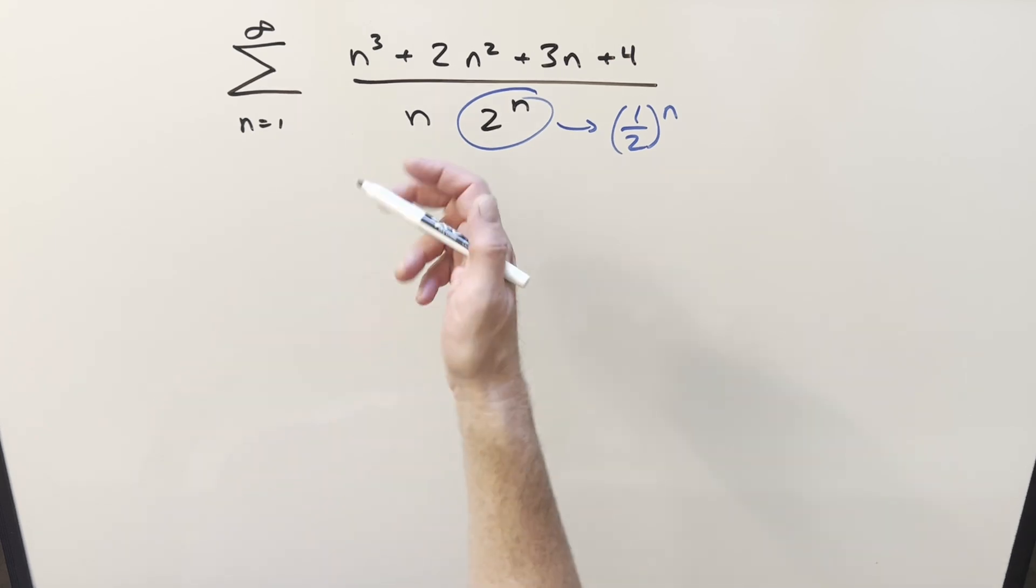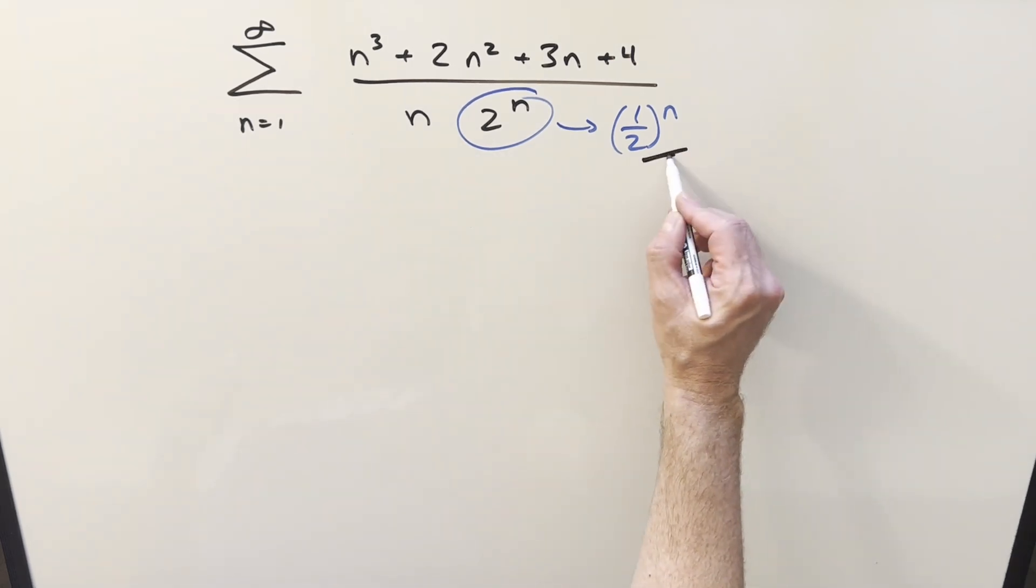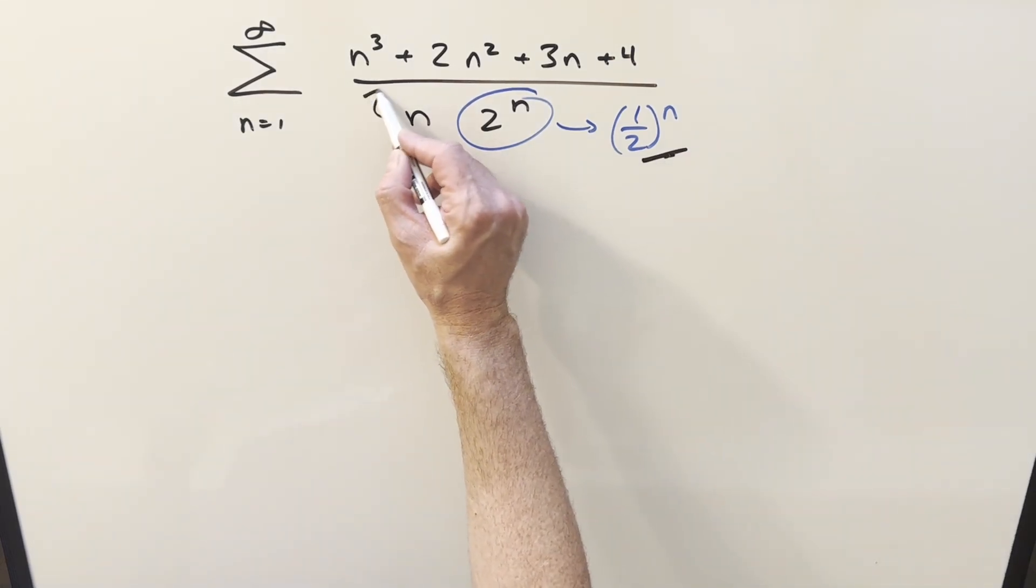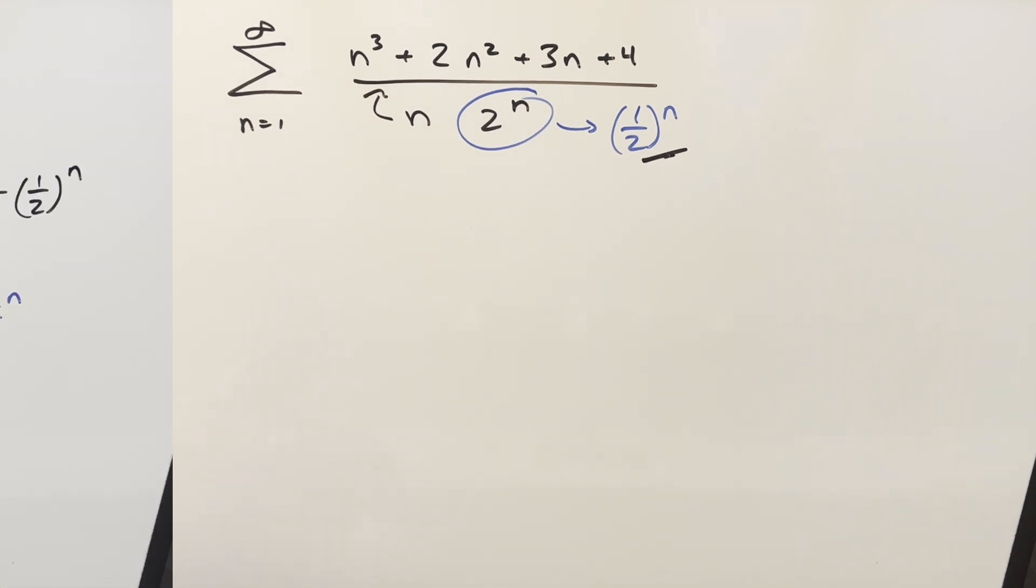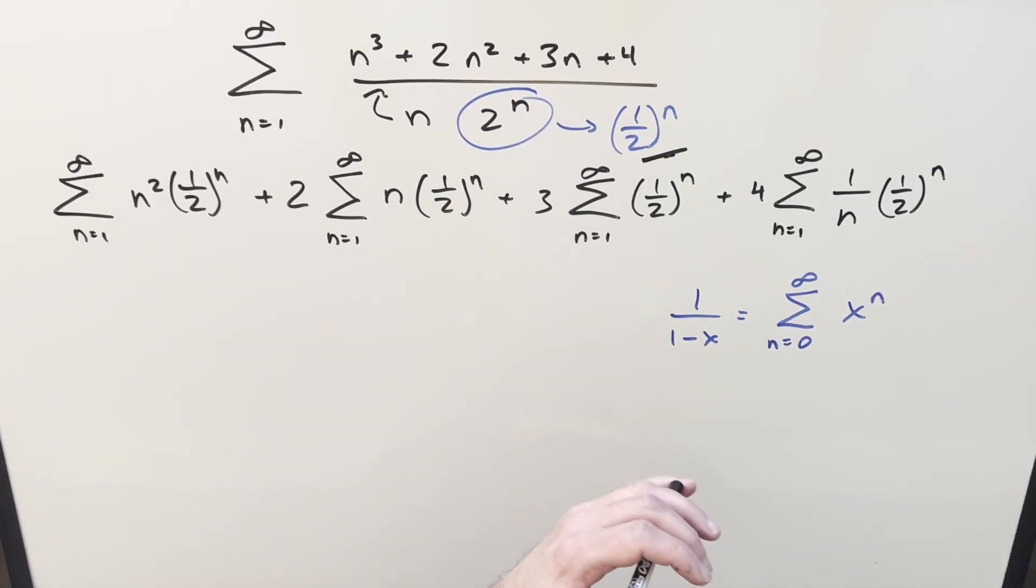So let's rewrite this as four separate sums. I'm going to divide the n into the numerator. Now we have this all broken up and I have my geometric series formula over here to the right. We do have, for the convergence on this, we're going to want absolute value of x less than 1. It's not going to be a problem because the way we're using this, our x value everywhere is going to be this 1 half. So that's going to meet this restriction here.